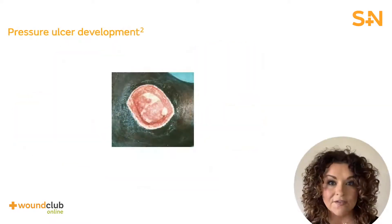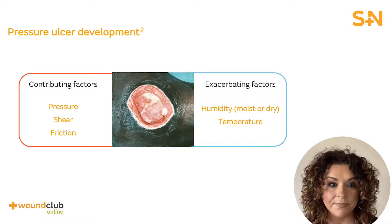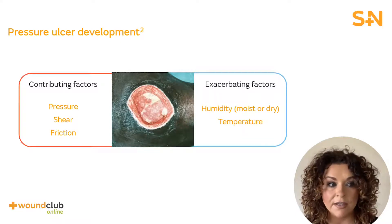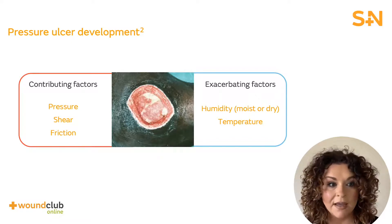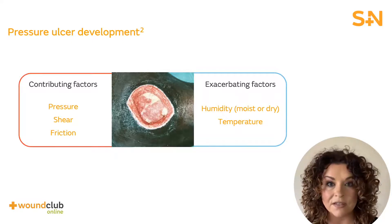Let's consider the factors contributing to pressure ulcer development, which are pressure, friction and shear. Humidity and temperature are not direct causes of pressure injuries. However, they are exacerbating factors. Moisture and temperature can weaken the skin and also increase the risk of friction and shearing of superficial tissue, whereas very dry skin becomes brittle and has increased risk for fissures or cracks.